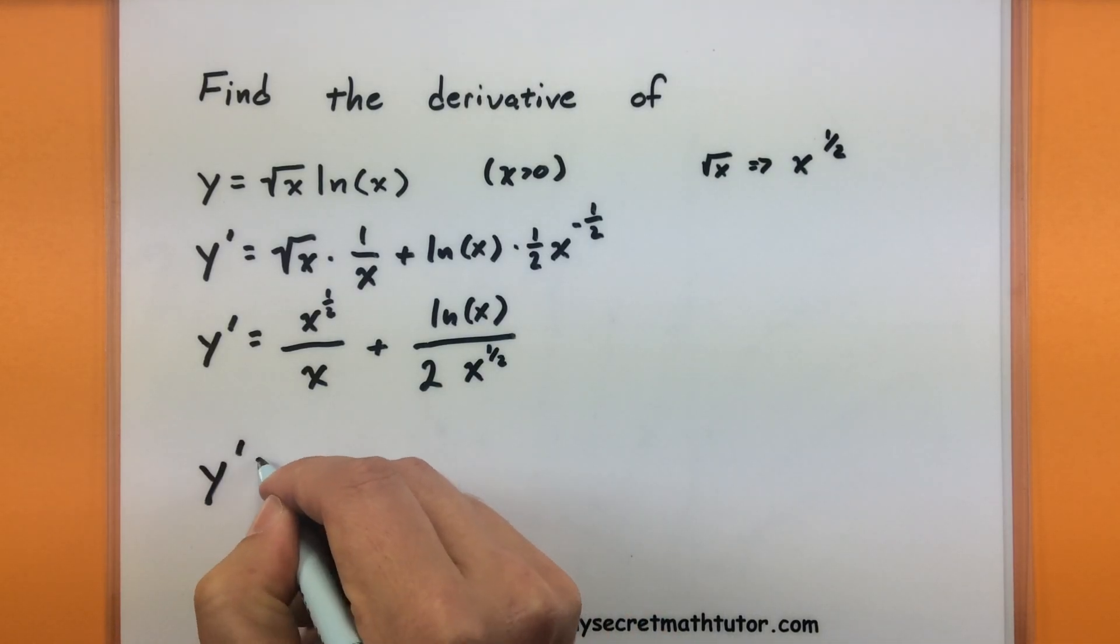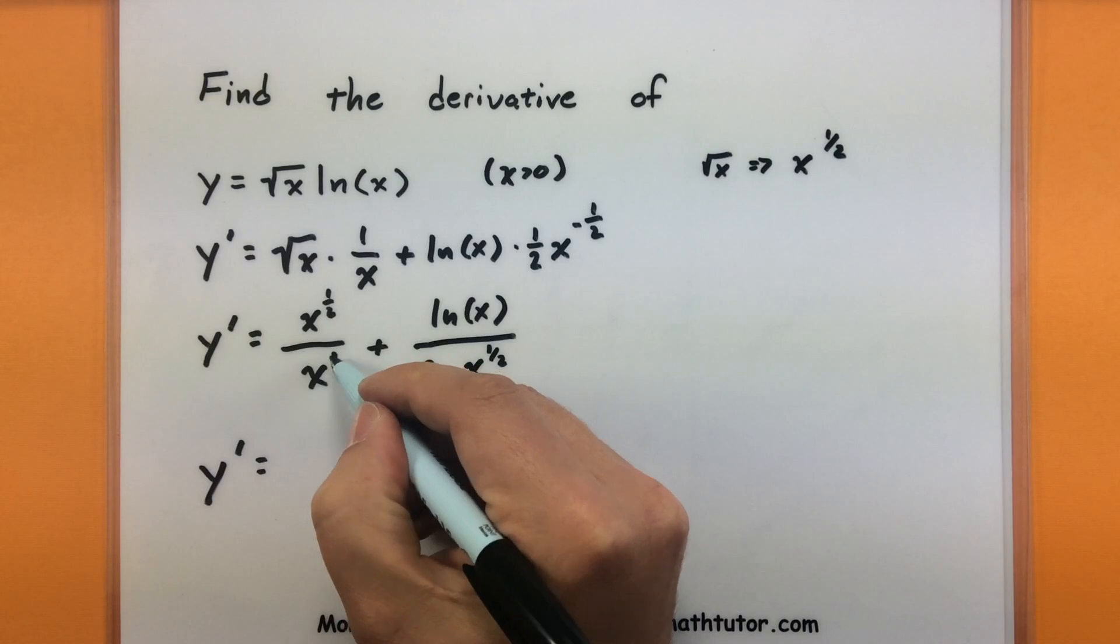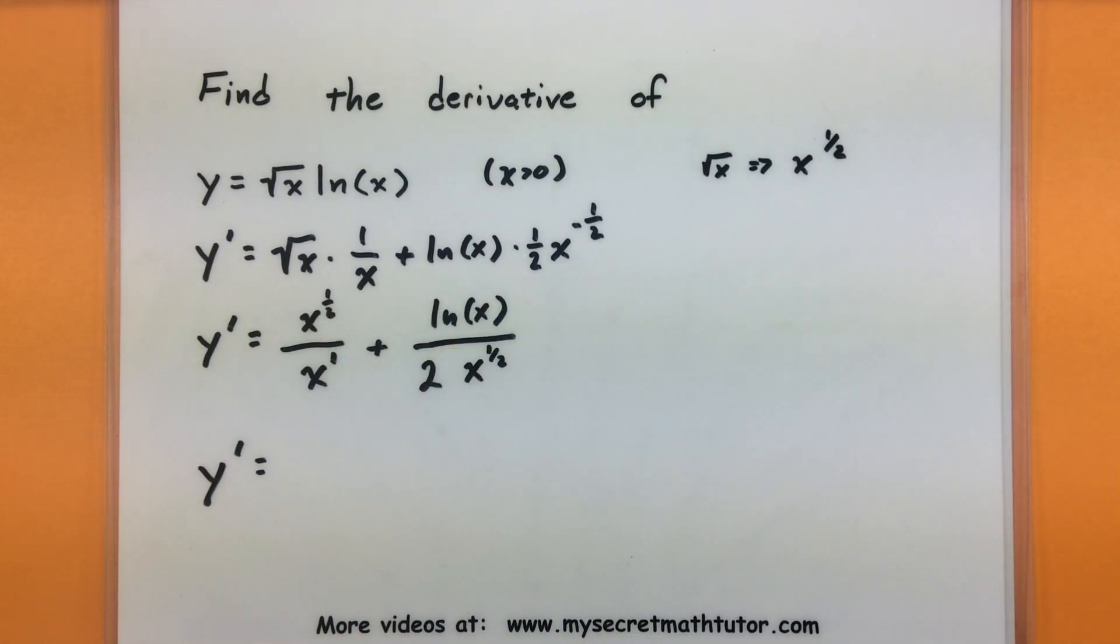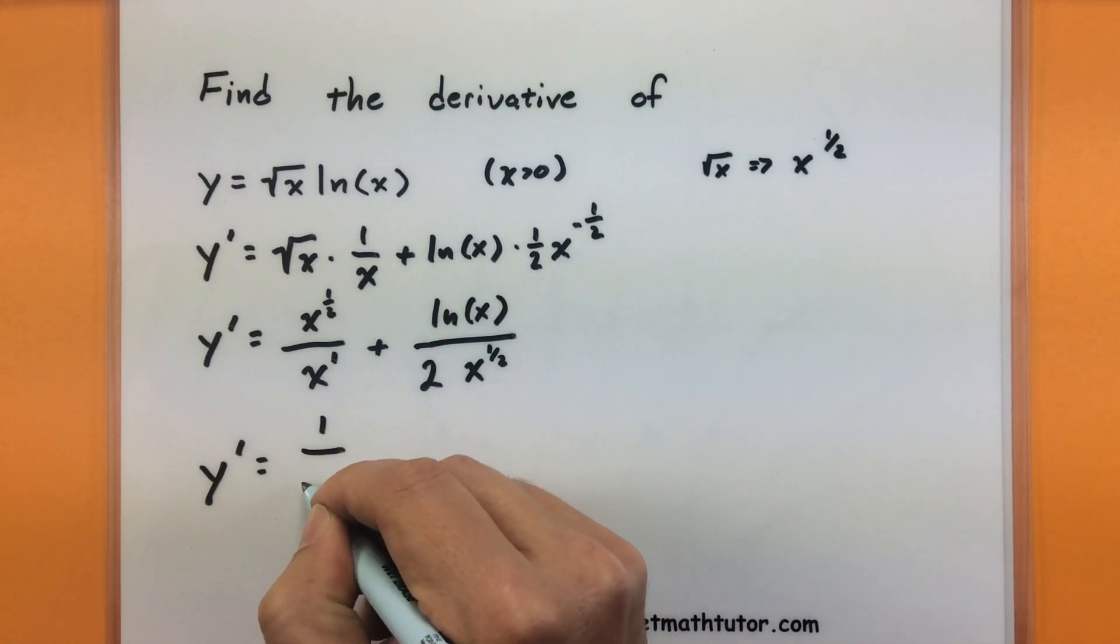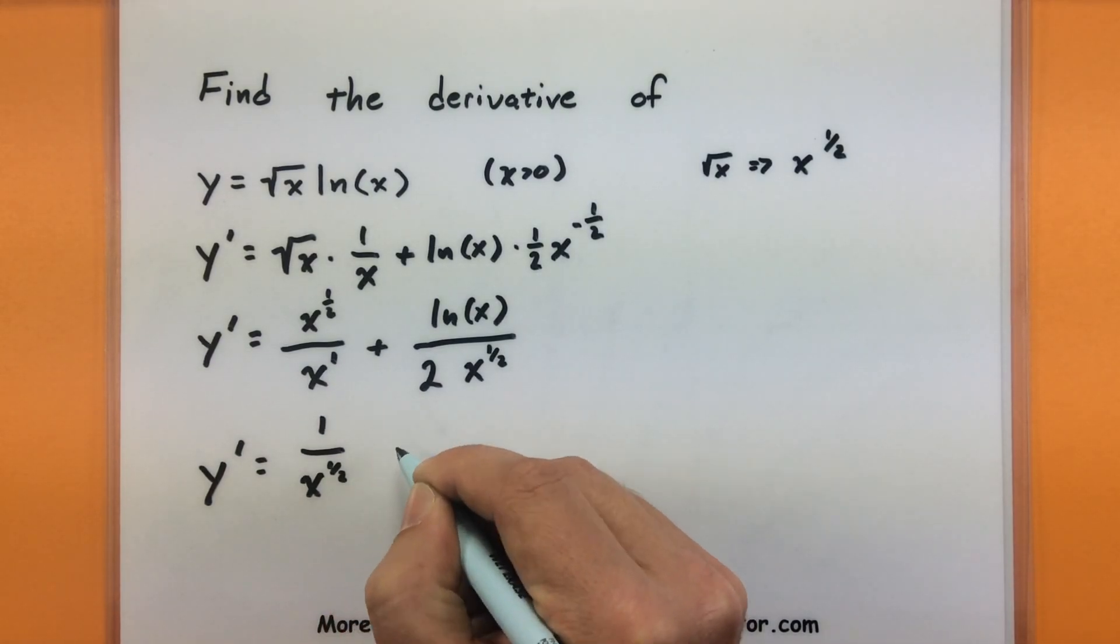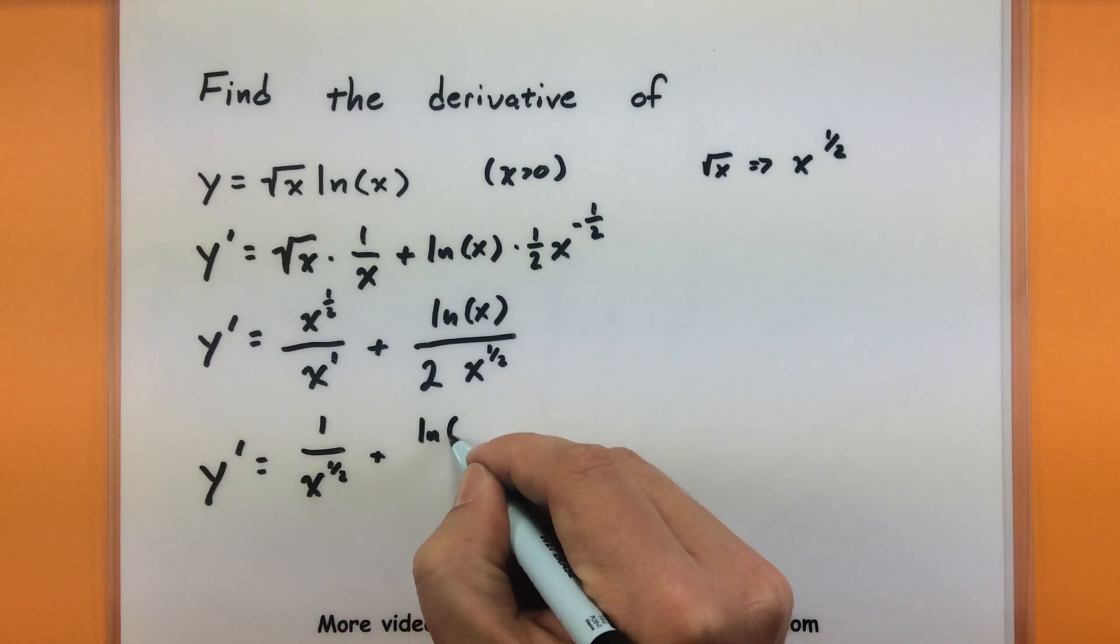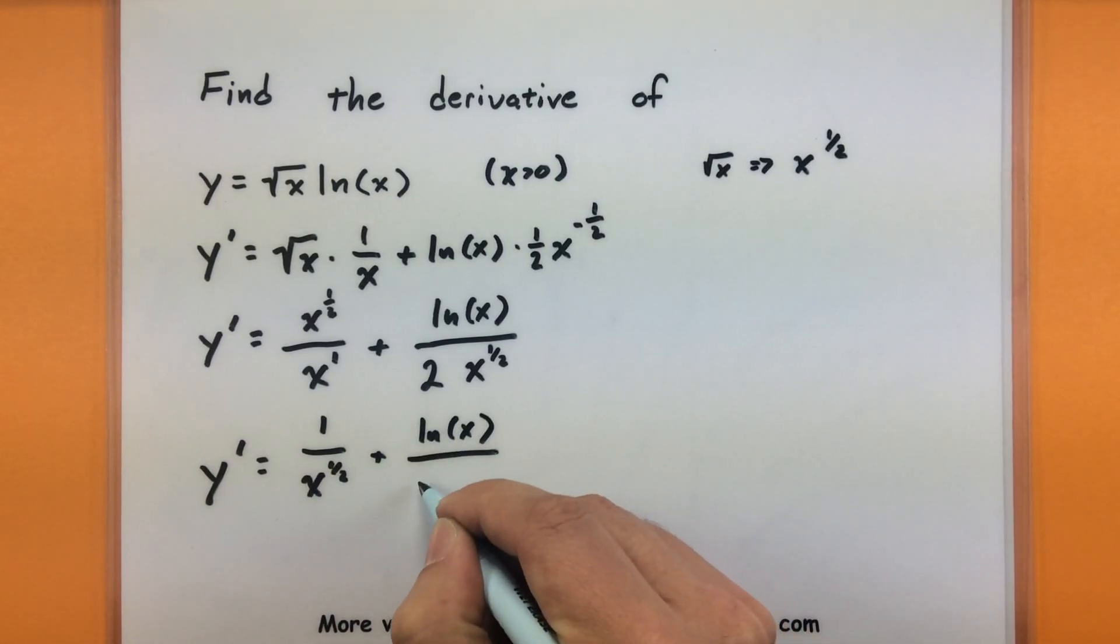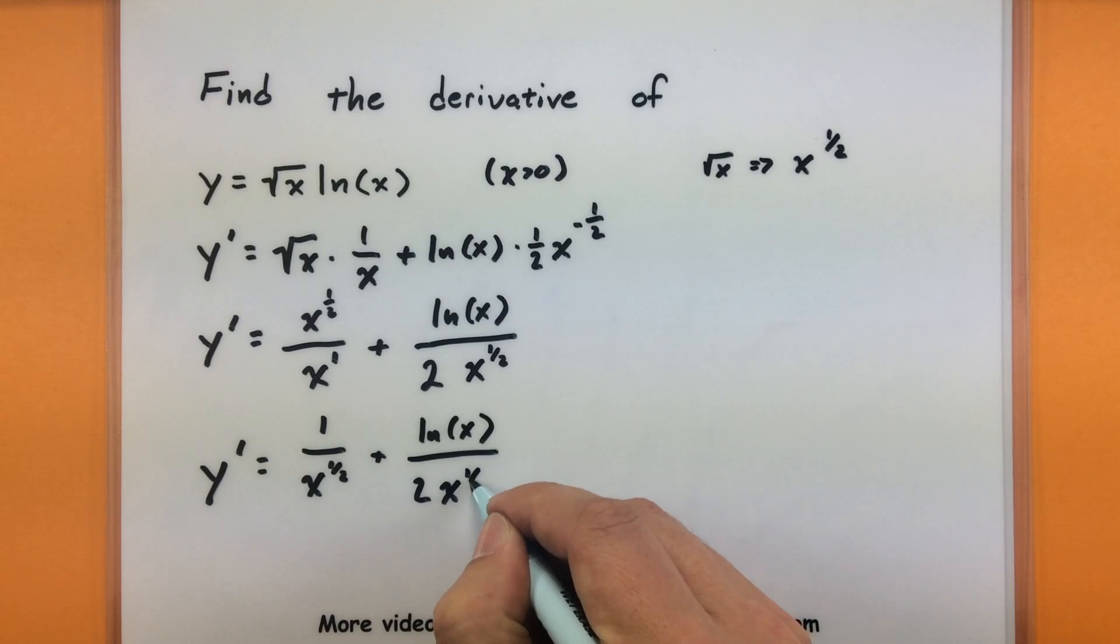Continue simplifying here. So this is to the first power, this is to the 1 half power. It looks like I can cancel out a half x, so to speak. So we'll end up with x to the 1 half power, plus the natural log of x, all over 2, x to the 1 half.